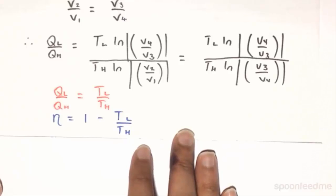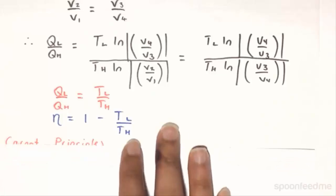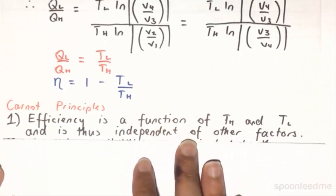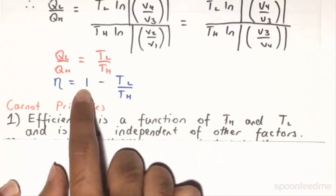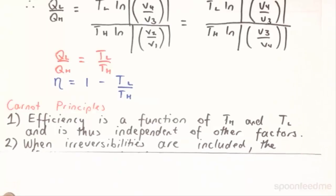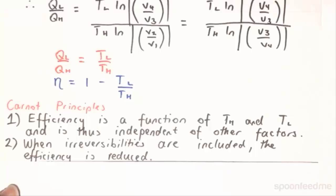These derivations lead us to the Carnot principles. And the first one states that the efficiency is a function solely of TH and TL, which makes sense because they are the only variables within this expression. And the second Carnot principle is that when irreversibilities are included, the efficiency is reduced.